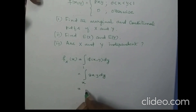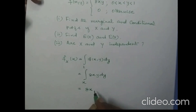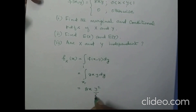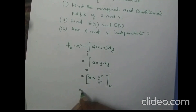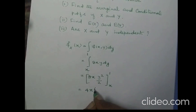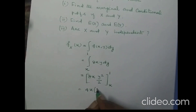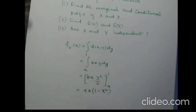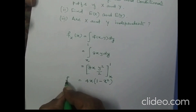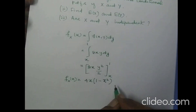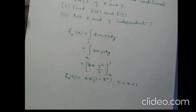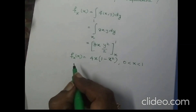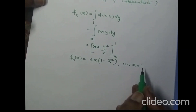Integrating with respect to y: 8x is a constant, and the integral of y is y²/2 evaluated between limits x to 1. So 8/2 = 4x, substituting the upper limit: 1² = 1 minus the lower limit x². Therefore fx(x) = 4x(1 − x²), and the limit for x is 0 < x < 1, since we derived the marginal from the two-dimensional random variable.